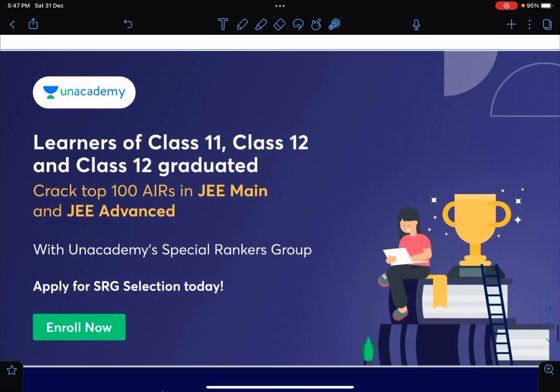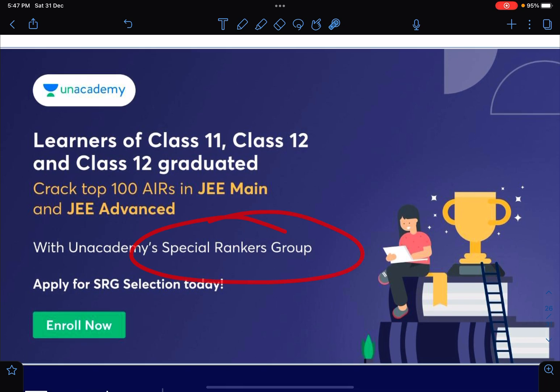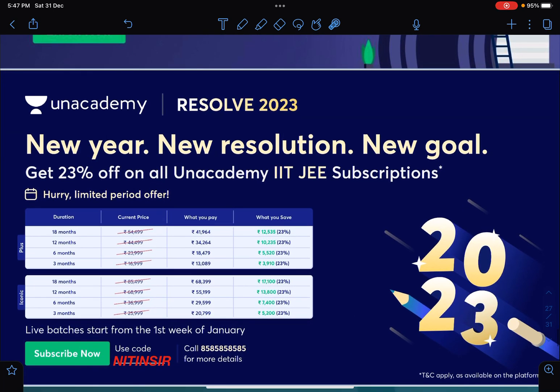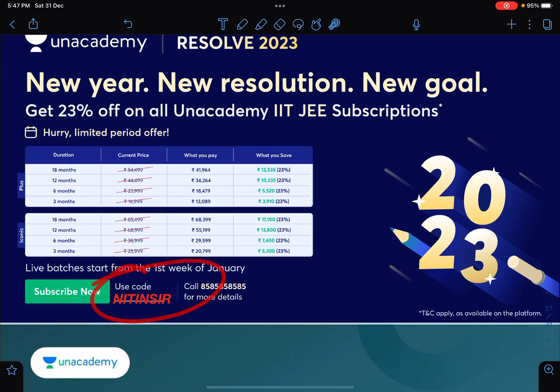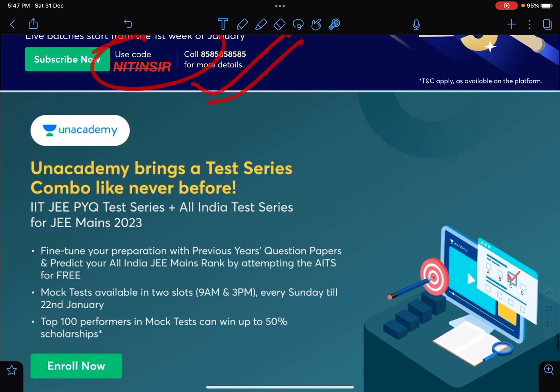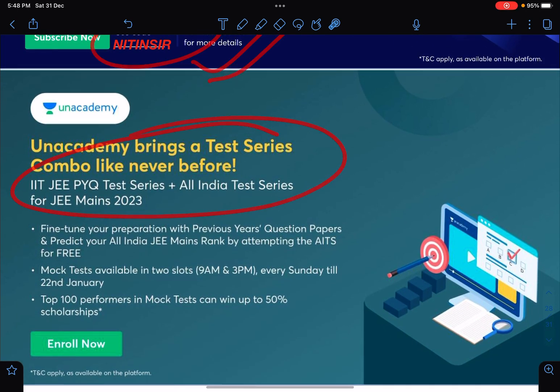This is about SRG batch which is going on in Unacademy - it is a toppers batch. If you are looking for top 100 ranks, you can definitely look for it. Result 2023 is there with 23% off in all Unacademy subscriptions. If you want to connect with me on Unacademy, you can use my code NITINSIR. There is a test series for Mains as well as Advanced. You can see here PYQ test series and All India test series for Mains 2023.